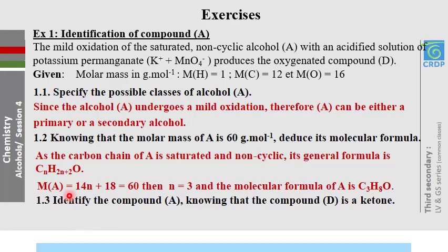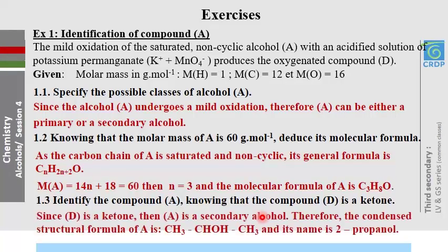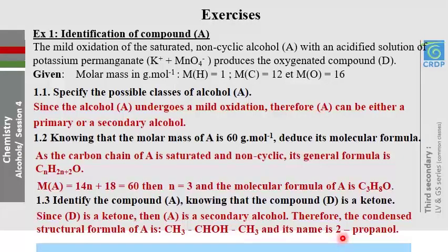Part 1.3: identify compound A, knowing that compound D produced by oxidation is a ketone. If the product is a ketone, then compound A must be a secondary alcohol, because secondary alcohols give ketones upon oxidation. With three carbon atoms and the OH at the middle carbon, compound A is CH₃–CH(OH)–CH₃, which is 2-propanol.